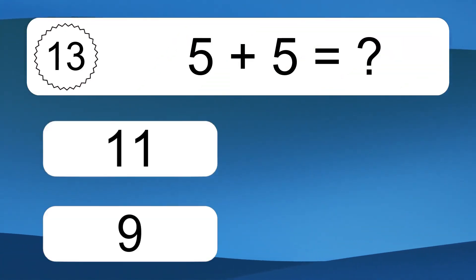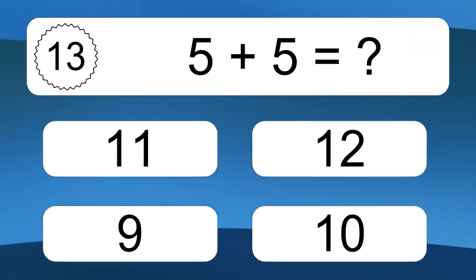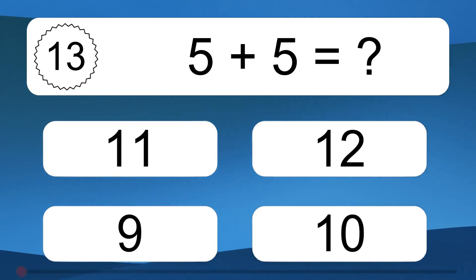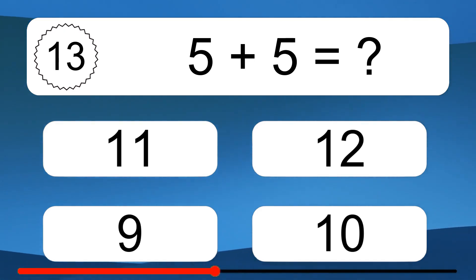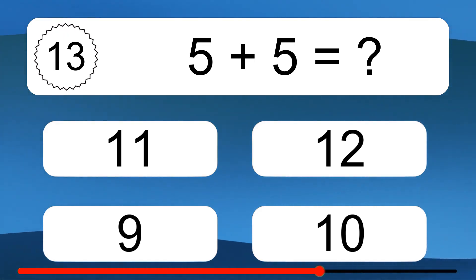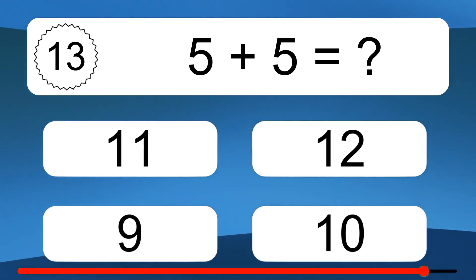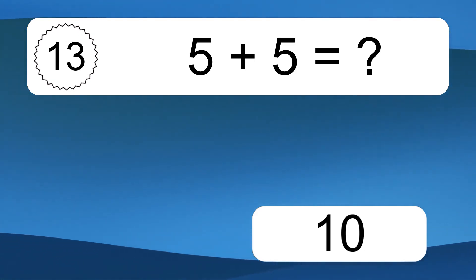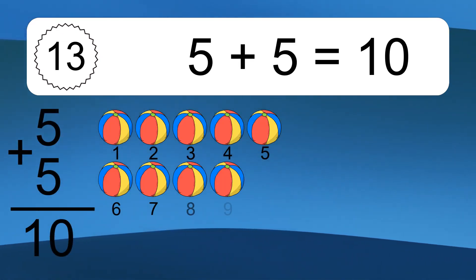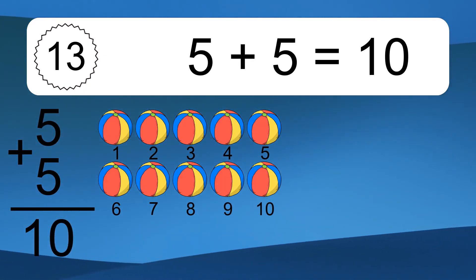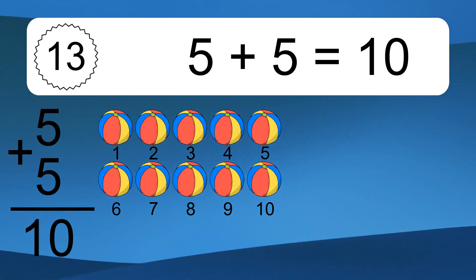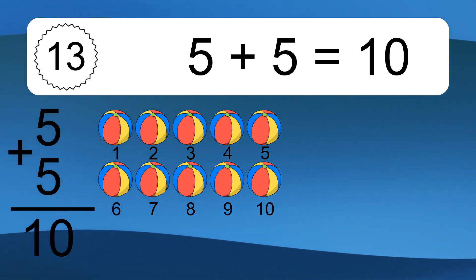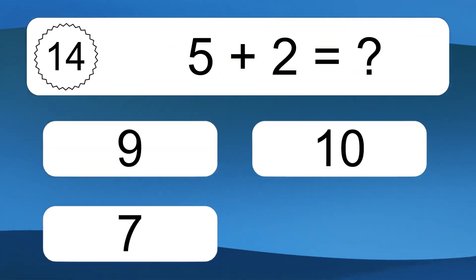5 plus 5 equals what? 5 plus 5 equals 10. Let's count it. 1, 2, 3, 4, 5, 6, 7, 8, 9, 10.